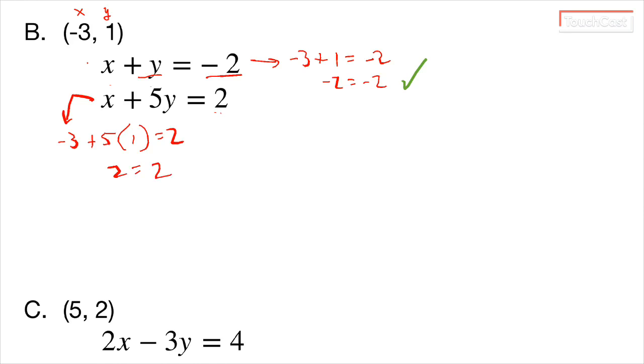So in this particular case, both conditions are satisfied. Therefore, this ordered pair is a solution to the system.